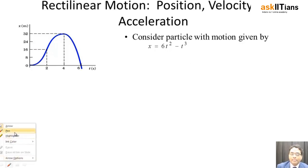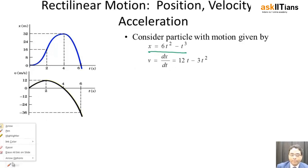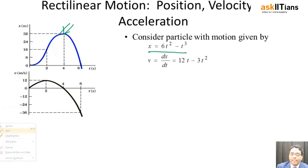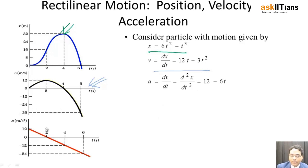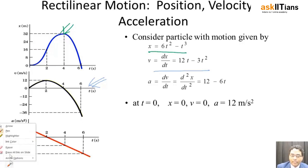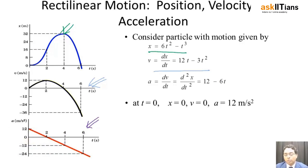Looking at the graphs: the displacement graph shows x as a function of t. The velocity graph shows how velocity changes with time — it is a non-linear graph with a negative slope. The acceleration graph is linear, meaning its slope does not change — so the acceleration is constant in this case.